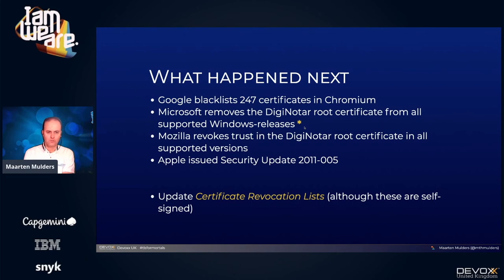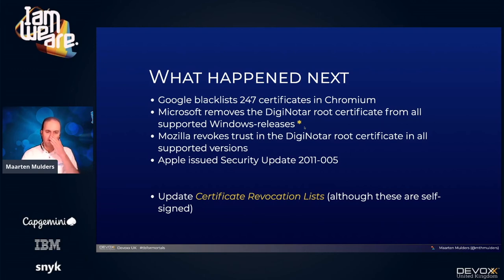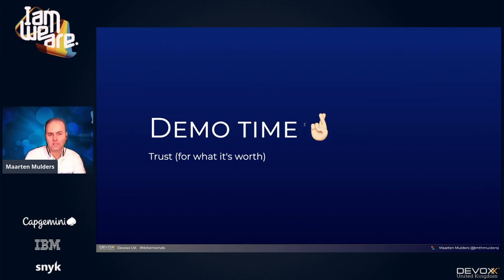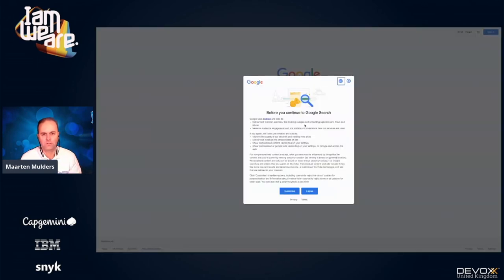What eventually should happen — and also did happen — is that the certificate authority updated their certificate revocation lists. Those lists are published by every certificate authority to say: we have issued this or that certificate in the past, but you should no longer trust it.